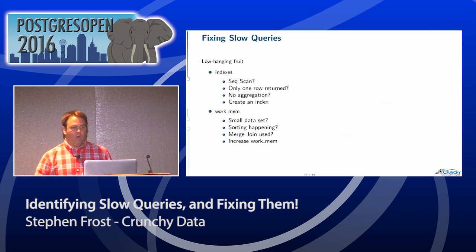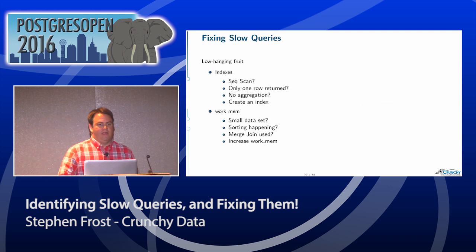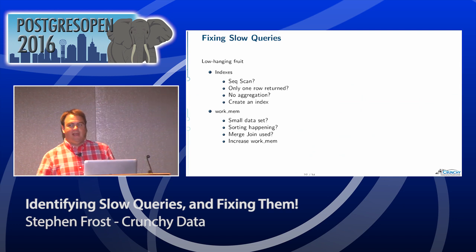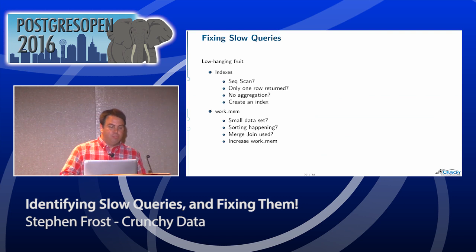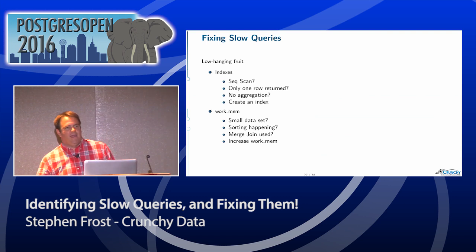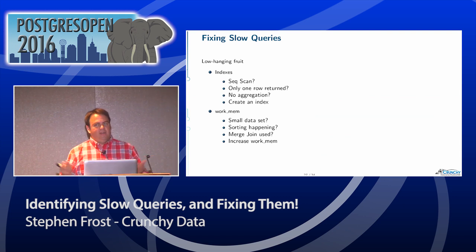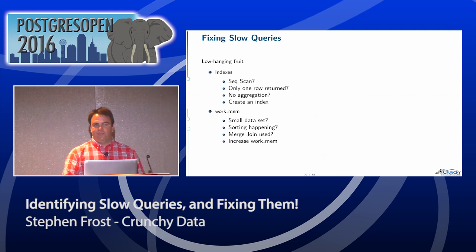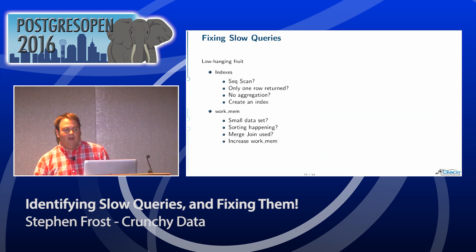Now let's talk about what we're going to do — there are a number of low-hanging fruit items. If we have a sequential scan happening and you're only getting one record back and not doing any aggregation, you probably want an index. And if you don't have an index or maybe can't have one for some reason, think about whether there's a way to constrain the information using a conditional that you can use with an index.